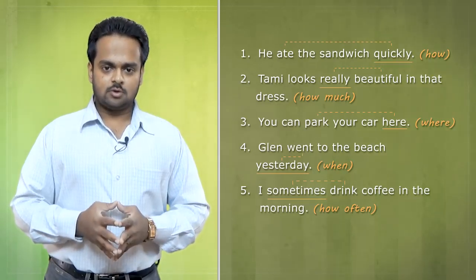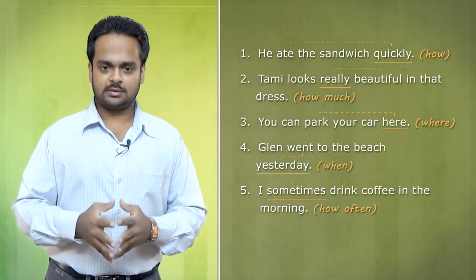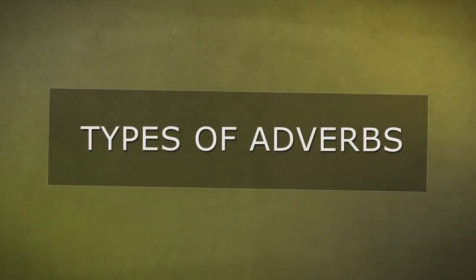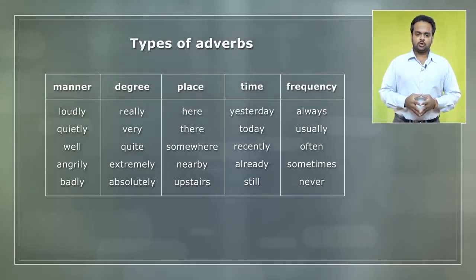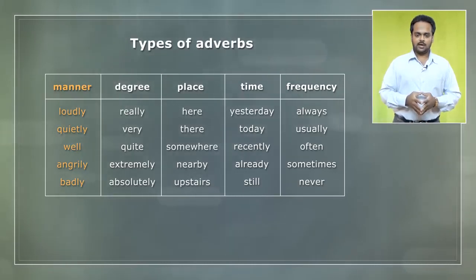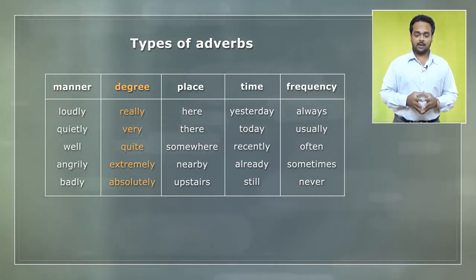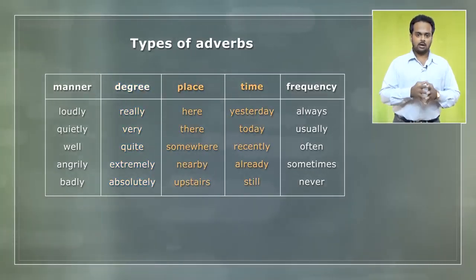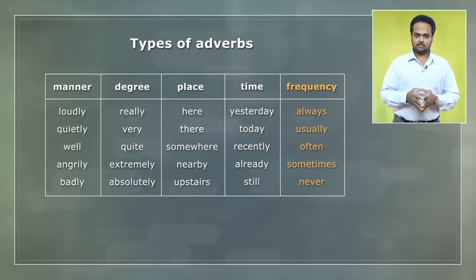Based on these functions or the different jobs that they do, adverbs are divided into five common types. Adverbs are usually classified as adverbs of manner, degree, place, time, and frequency. Adverbs of manner tell us how – in what way an action happens. Adverbs of degree tell us how much – very good, really strong, and so on. Adverbs of place and time tell us where and when. And adverbs of frequency tell us how often – always, never, sometimes, etc.